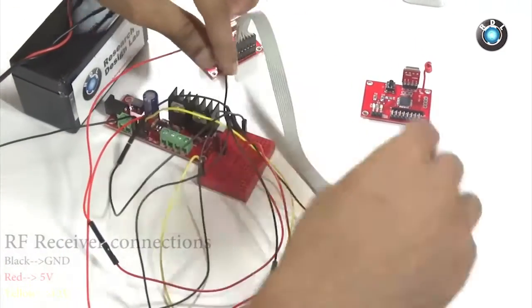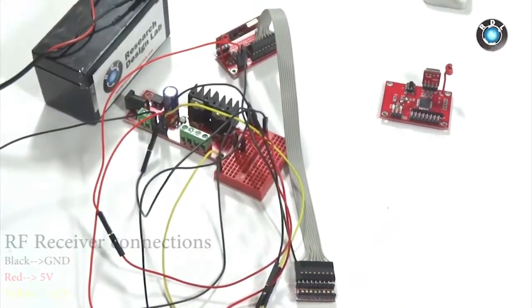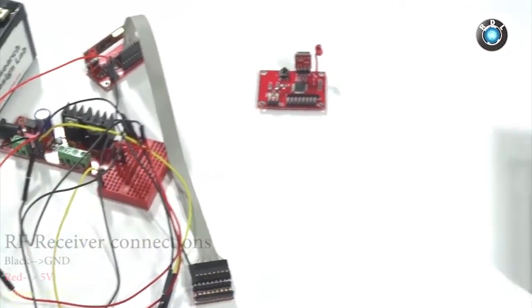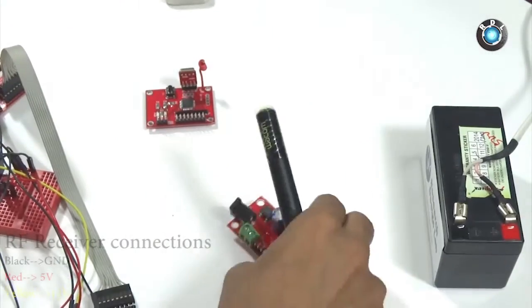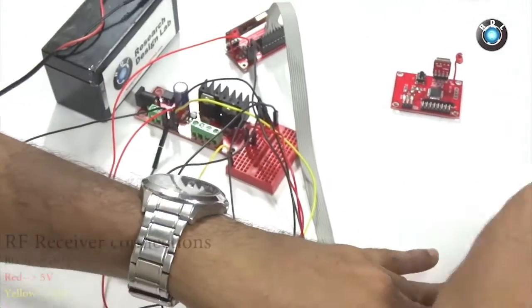With this the receiver module is ready. Next, we need to power on the RF transmitter module. Again, let me use the regulator power supply board. The transmitter over here could be powered on with either 5V or 12V.